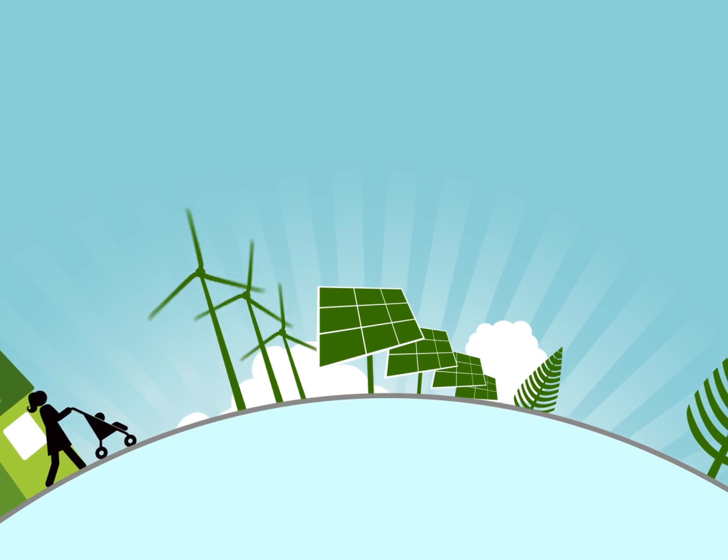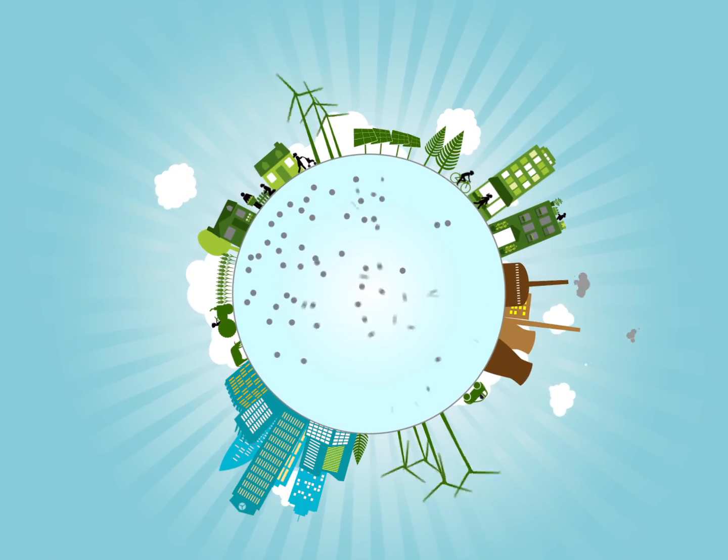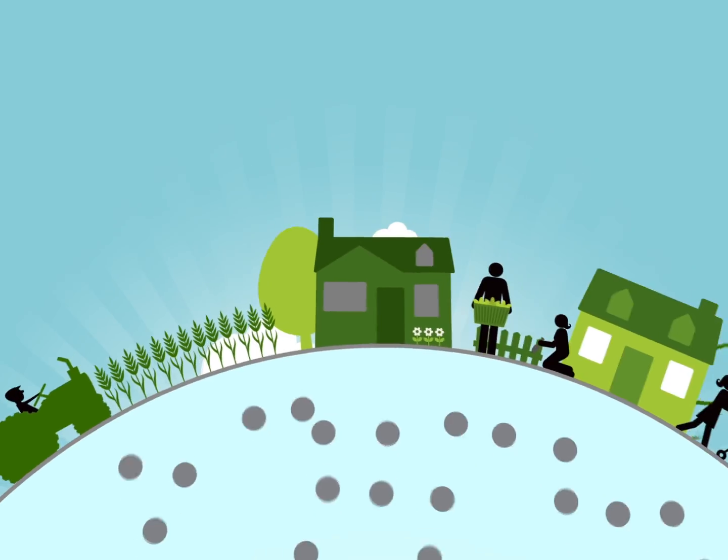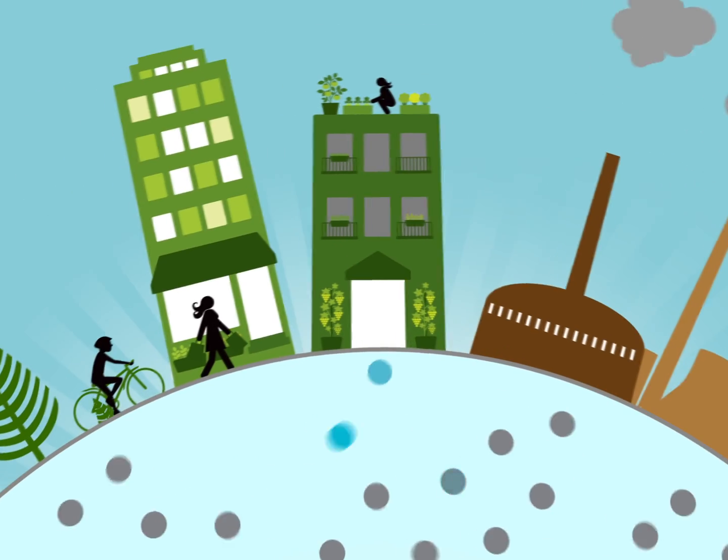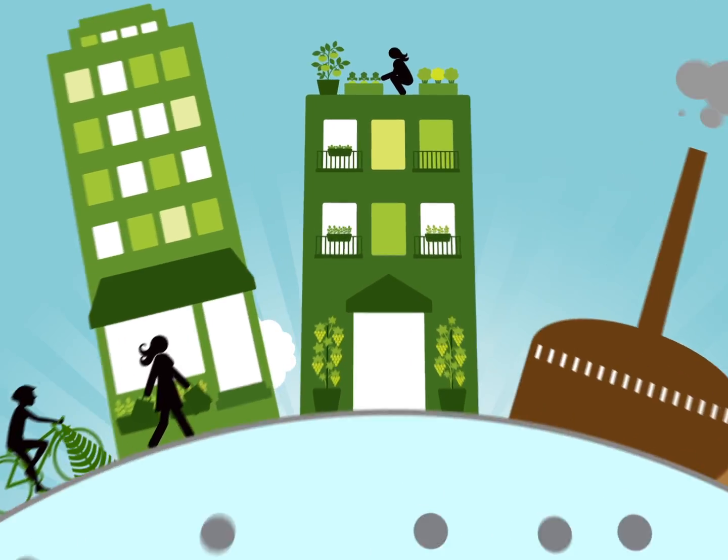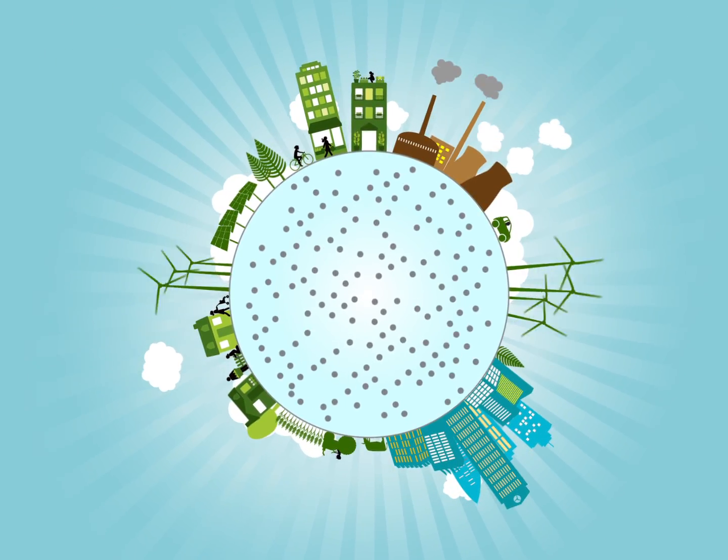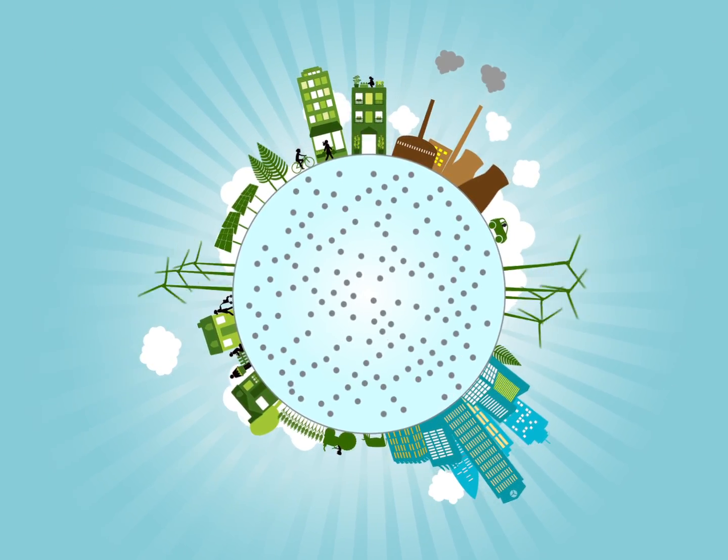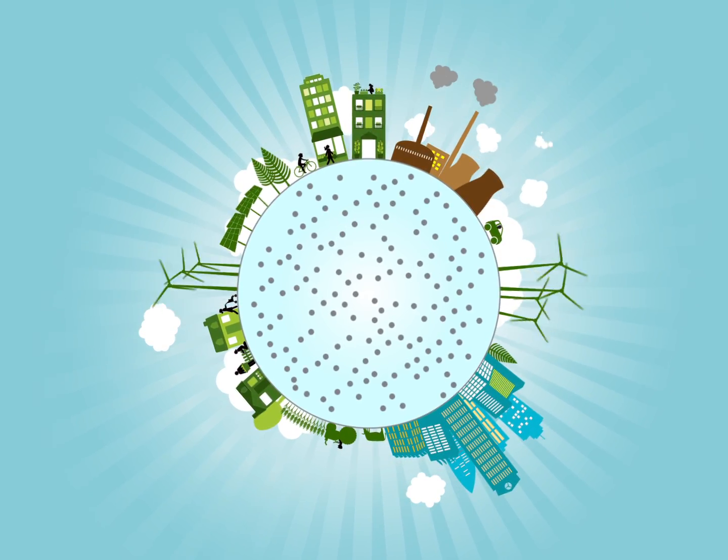No matter where electricity is generated, it is mixed together on the shared electricity grid. When you turn on your lights or your TV, you pull some of that electricity out. Once electricity is put on the grid, there's no way to know where it came from or how it was generated. All electricity is the same.